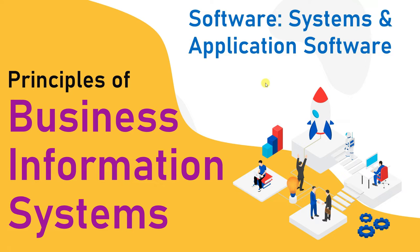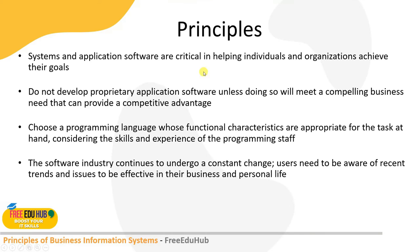Hi and welcome back to the course on principles of business information systems. Today we'll try to understand software systems and application software. The objectives of this chapter are that systems and application softwares are critical in helping individuals and organizations achieve their goals. We'll understand the overall importance of systems and applications and how they can add value to your organization and how you can maximize profit using the right applications.